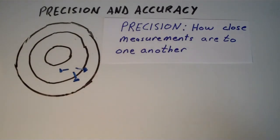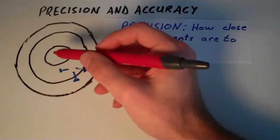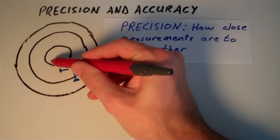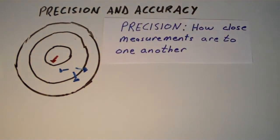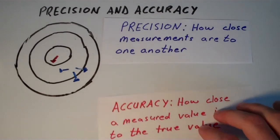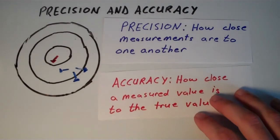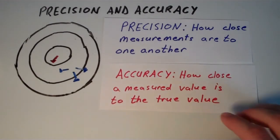Now suppose that I throw only one dart at the dartboard, but this one dart lands right on the bullseye. I mean, it's just right on there. Now we're just talking about how accurate that one throw was. So accuracy in terms of chemistry describes how close a measured value is to the true value.